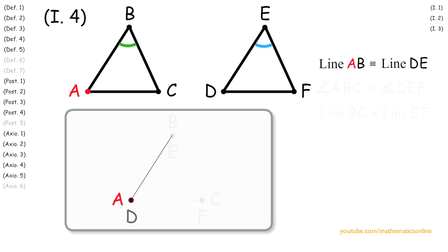Now since line AB is congruent to line DE, this means that points B and E must coincide exactly with each other.